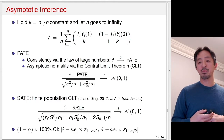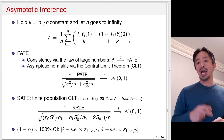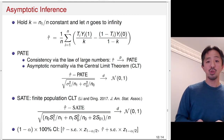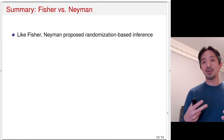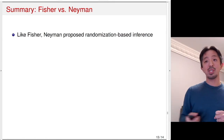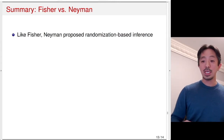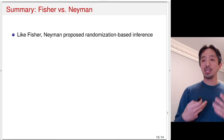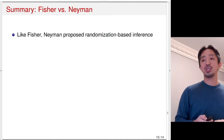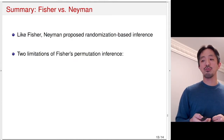To summarize, we've looked at Neyman's analysis, which contrasts with Fisher's permutation test and permutation inference. Like Fisher's permutation inference, Neyman proposed randomization-based inference — he only used the fact that the researcher randomized the treatment assignment, and for the case of PATE, that researchers actually did random sampling. He used those acts of randomization as the basis of inference.